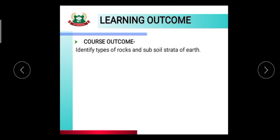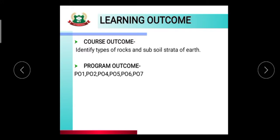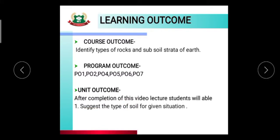The learning outcome, i.e. course outcome: first, identify types of rock and subsoil strata of the earth. Program outcomes are PO1, PO2, PO4, PO5, PO6, and PO7. The unit outcome: after completion of this video lecture, students will be able to suggest the type of soil for a given situation.